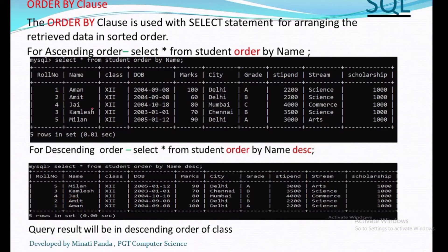Writing SELECT * FROM student ORDER BY name DESC will arrange all the names in descending order. In the first case it will be from A to M in alphabetical order, and in the second case it will be from M to A — because in the first case it starts with Aman and ends with Milan, and in the second case it will start with Milan and end with Aman.